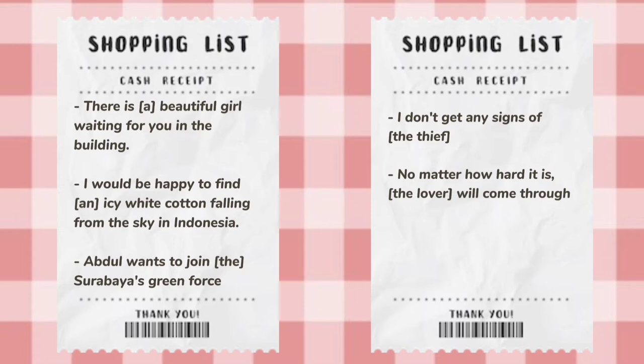In the scope of reference and inference, there are several aspects. The first one is referential and attributive views. The concept of referring to something doesn't always match the physical image or entity. Sometimes it can be something that we label as unknown. For example: 'There is a beautiful girl waiting for you in the building.' 'I would be happy to find an icy white cotton falling from the sky in Indonesia.' 'Abdul wants to join Surabaya's Green Force.' 'I don't get any signs of the thief.'